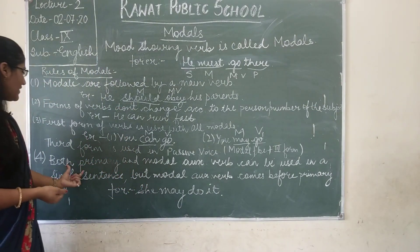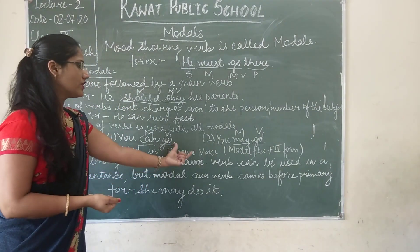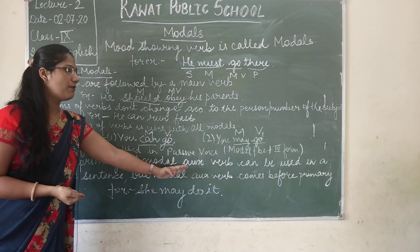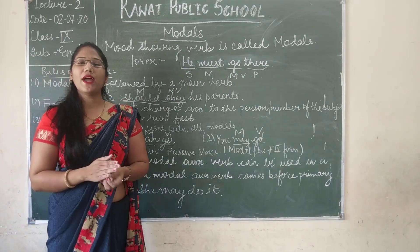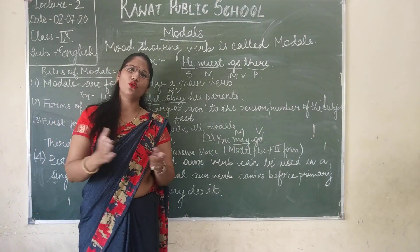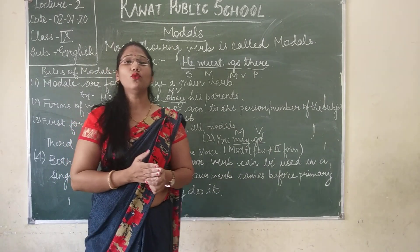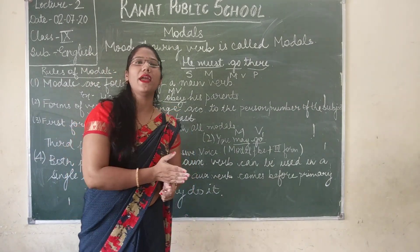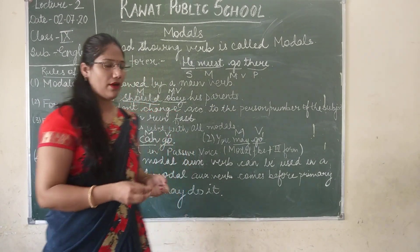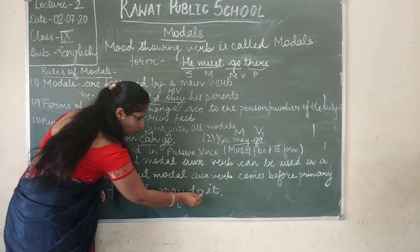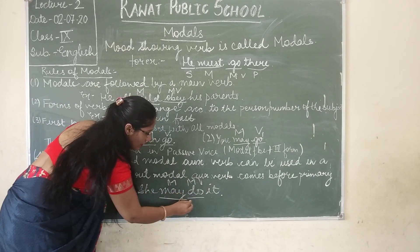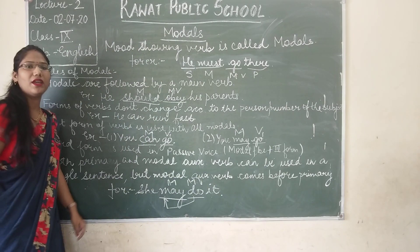Rule 4: Both primary and modal auxiliary verbs can be used in a single sentence, but the modal auxiliary verb always comes before the primary auxiliary verb. For example, 'she may do it' — here 'may' is the modal and 'do' is the main verb, so the modal always comes before the main verb.